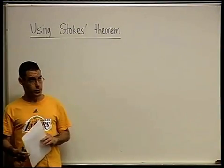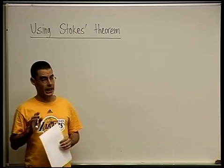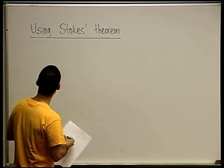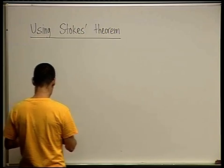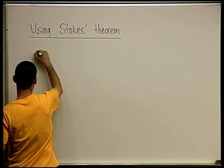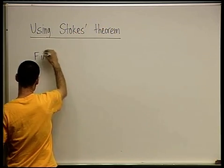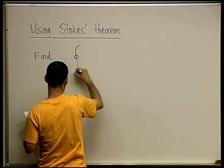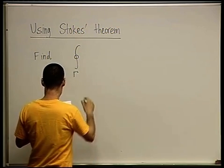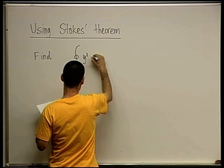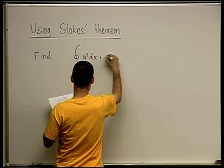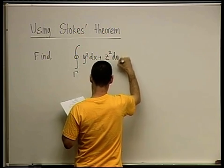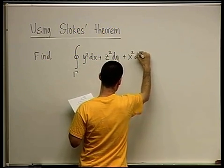In this clip, we want to use Stokes' theorem to calculate a line integral in three-dimensional space. Here's the example: find the integral over the closed curve gamma of y squared dx plus z squared dy plus x squared dz.